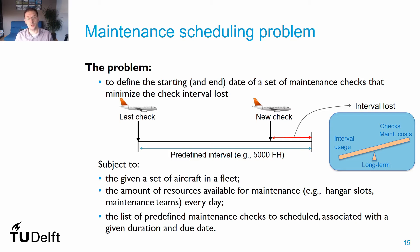The better we use the check interval given to us, the later we perform a maintenance check, the later we restart counting our usage parameters, and the later we schedule a subsequent check. While solving this problem, we must account for the set of aircraft in the fleet at a given state, a limited amount of resources available for maintenance every day — including maintenance slots, teams, skill types of technicians, machines, and other materials — and the list of predefined maintenance checks with their associated due dates and elapsed times.